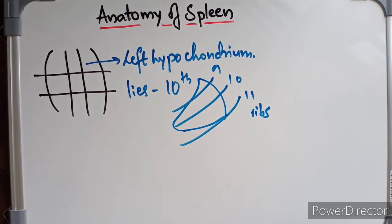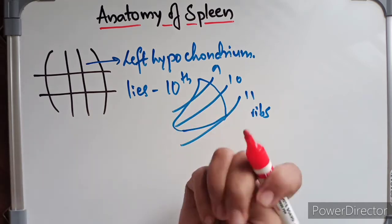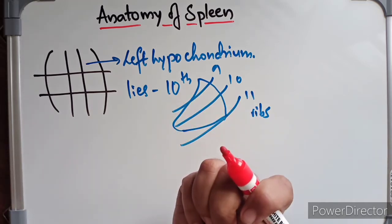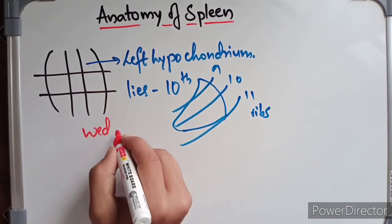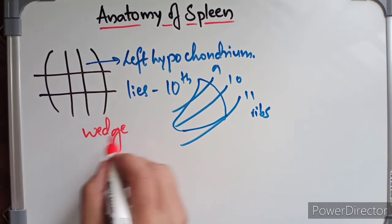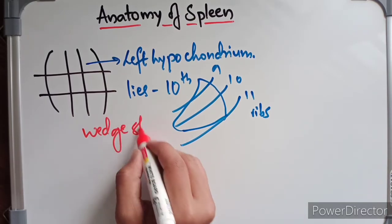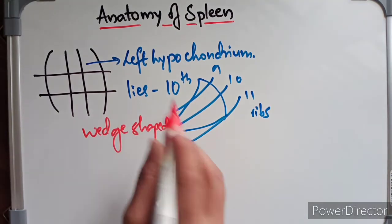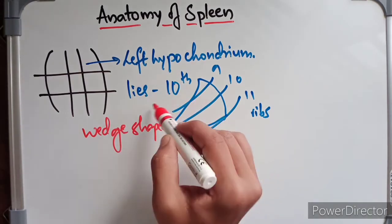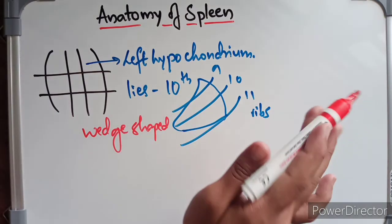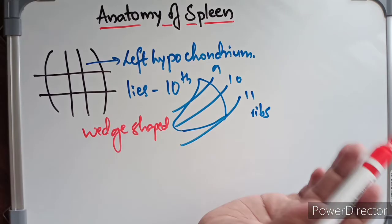The spleen is approximately the size of a fist and is generally wedge-shaped. It is located in the left hypochondrium, lying along the long axis of the 10th rib, situated below the mid-axillary line along the 9th, 10th, and 11th ribs.